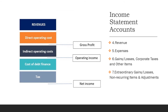An income statement is a financial statement that, when you subtract expenses from income, taxes are calculated on the remaining amount if profit, and the remainder is transferred to the balance sheet. In the table, addition and subtraction are performed step by step according to the order of importance. It gets data from: 4. Revenue; 5. Expenses; 6. Gains, losses, corporate taxes and other items; 7. Extraordinary gains, losses, non-recurring items and adjustments.